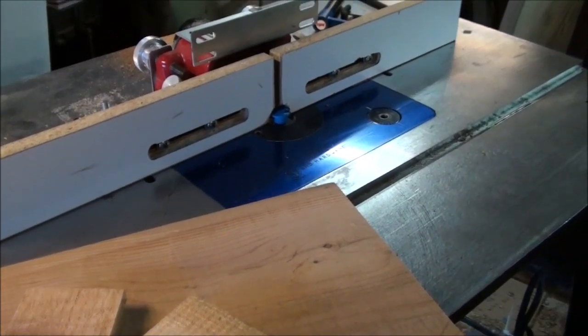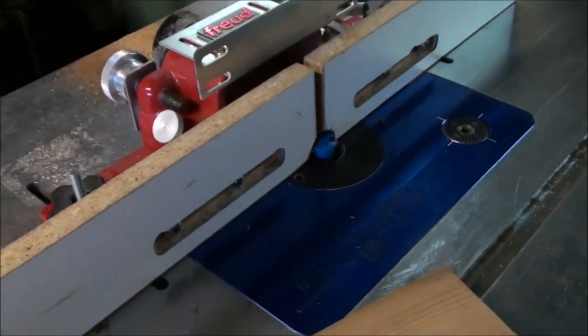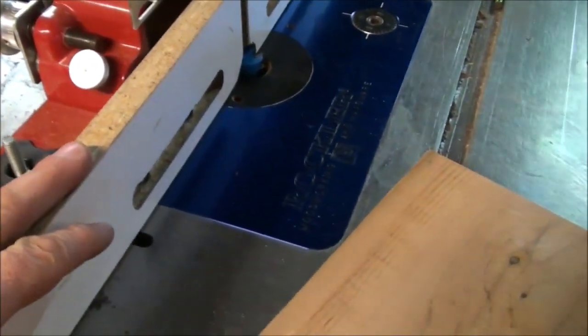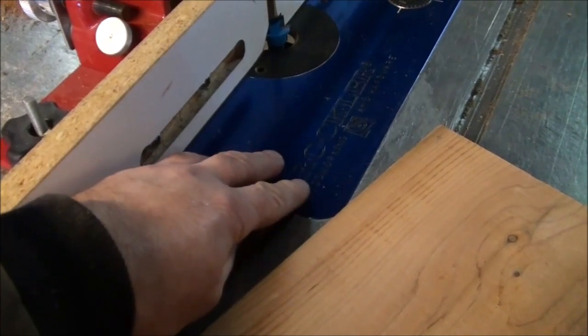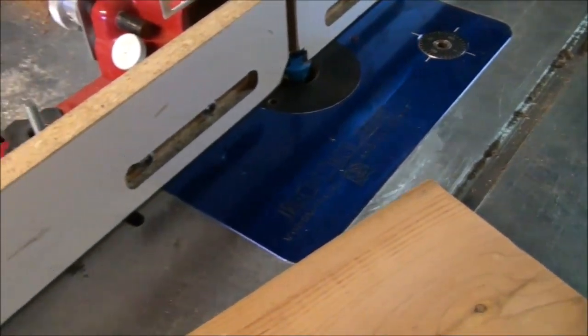He had a guy build him this table and he got a Kreg fence here for it and a Rockler insert for a router. I can definitely say this is probably one of the most versatile tools that one can possibly have for a combination router/shaper table.